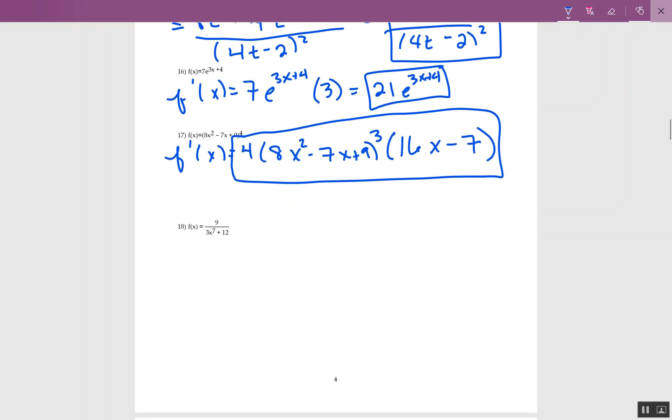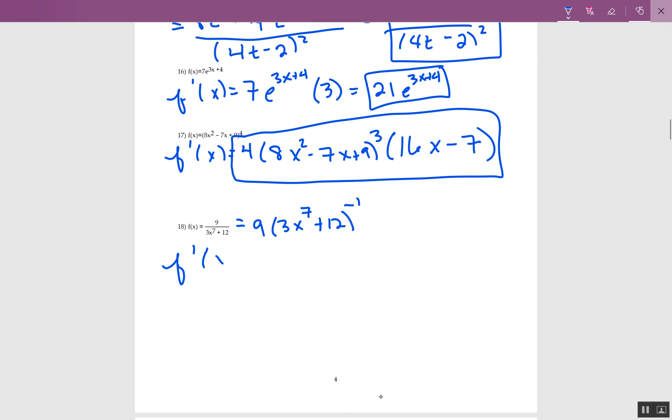18, I might not look at it at first, but it is exactly the same as the last one as far as it's just the chain rule. So I'm going to keep the 9. I'm going to write 3x to the 7th plus 12. My power is negative 1. So I'm not going to do the quotient rule because that 9 doesn't have an x.